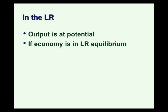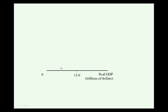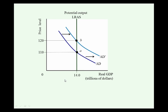In the long run, output would be at potential. So if an economy is already in long-run equilibrium, monetary or fiscal policy only affects the price level in the long run. Shifts in aggregate demand only affect the price level — they don't affect real GDP in the long run — because the long-run aggregate supply curve is vertical. So monetary and fiscal policy would be useful for closing short-run gaps, but we wouldn't expect them to have an impact in the long run.